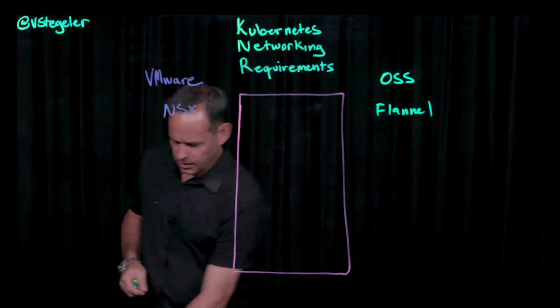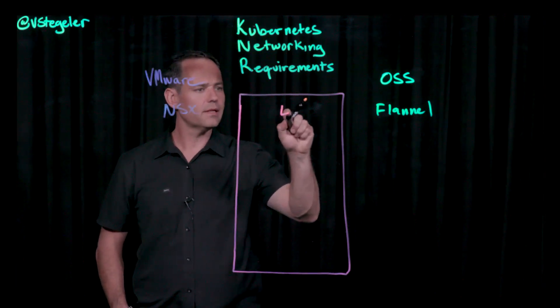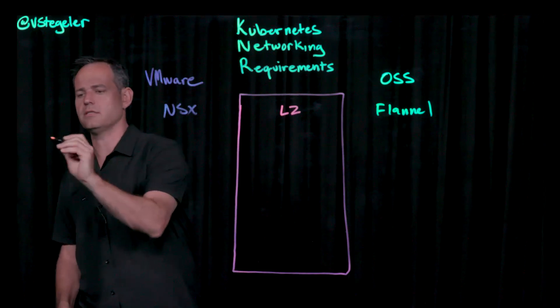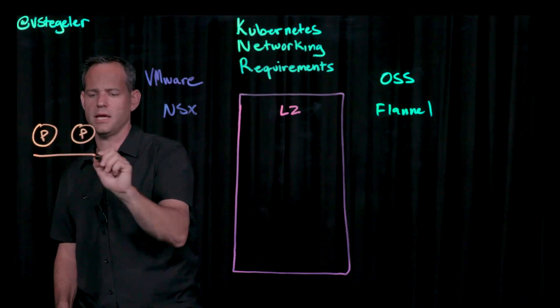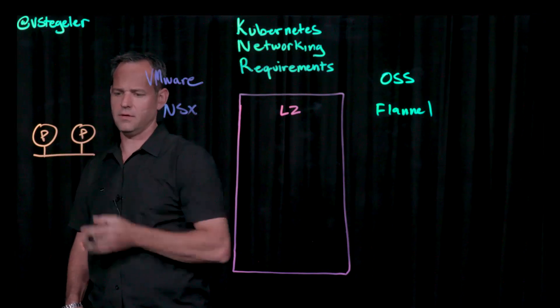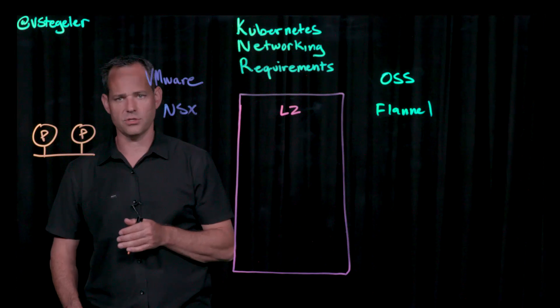The problem with that comparison here is that this is really only layer two connectivity between the actual pods within Kubernetes. So if I have a pod here and a pod here within the same Kubernetes cluster, Flannel basically provides the connectivity between those pods. Of course, NSX can do that function as well.